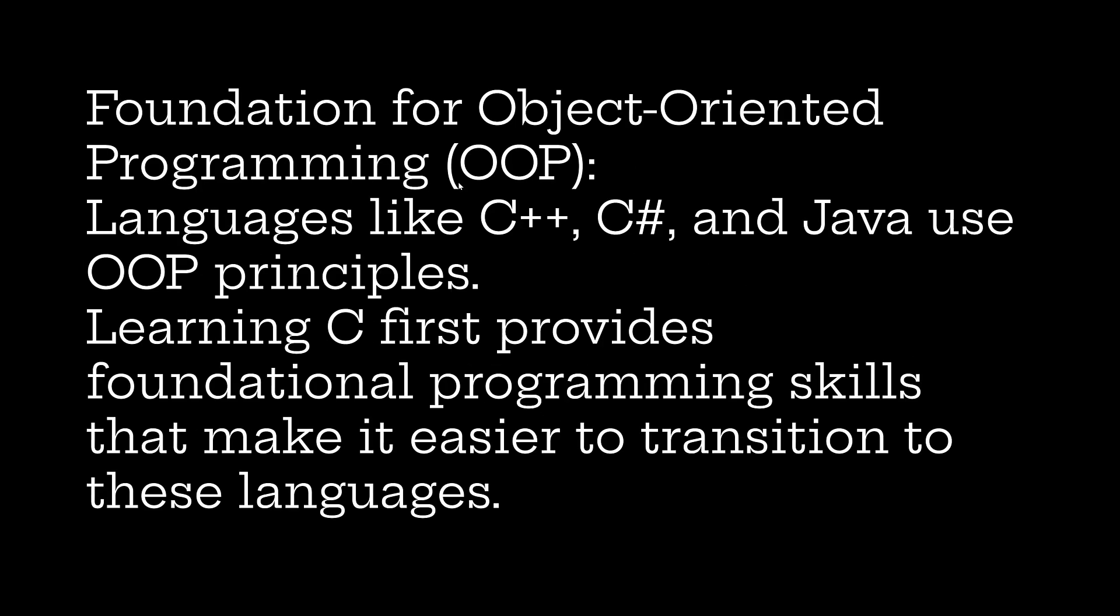Foundation for object-oriented programming. If you are new to programming and you want to learn about object-oriented programming, languages like C++, C sharp and Java use OOP principles. Learning C first provides foundational programming skills that make it easier to transition to these languages. C is the basic foundational programming skill that makes it easier to move into the next programming languages.